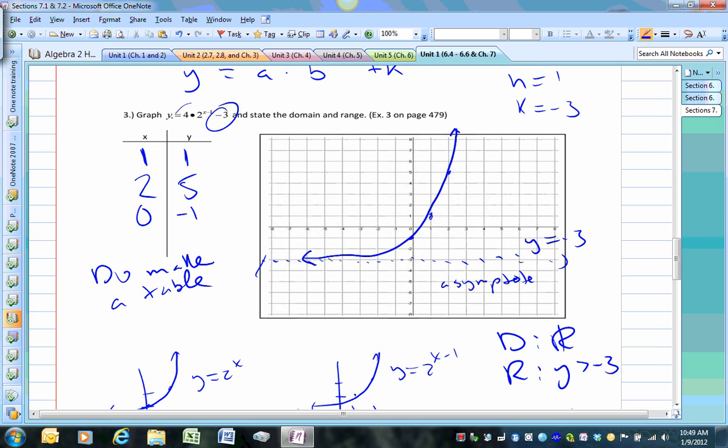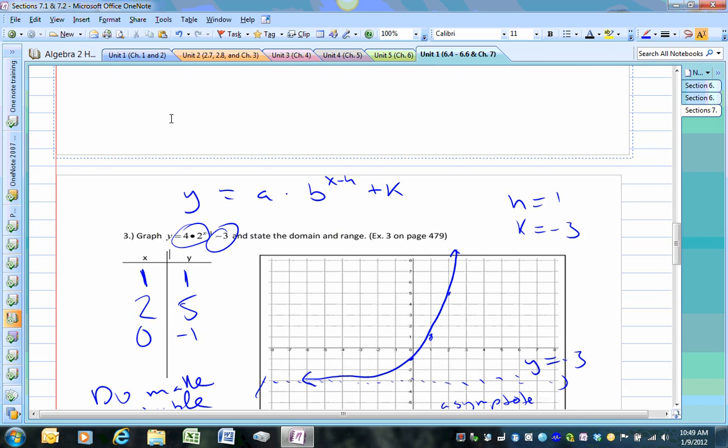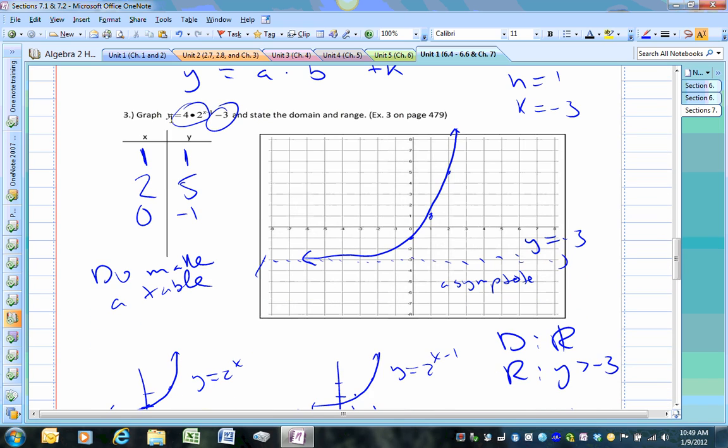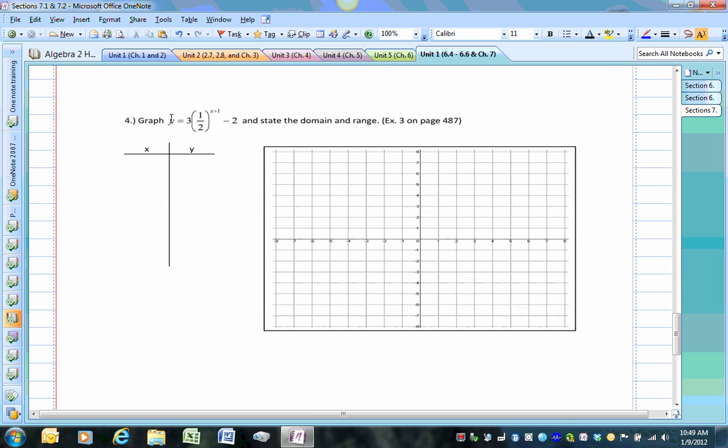And the reason why is because of this right there. Because, this, by itself, can never be negative, but then when you minus 3, it shifts it down by 3. Because, originally, the asymptote was y equals 0, now it goes down by 3 units. So, I'll give you a chance to try to do one of these on your own tonight, and then we'll talk about it in class tomorrow.